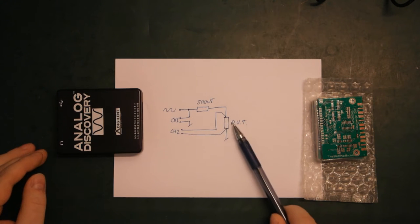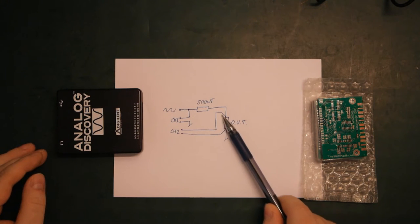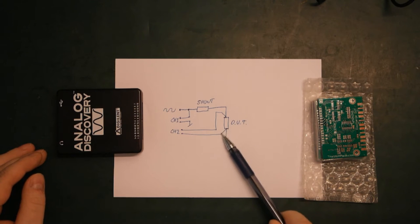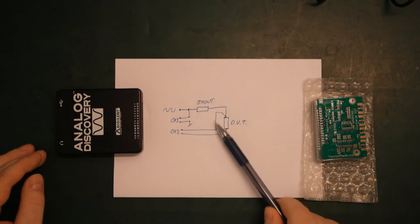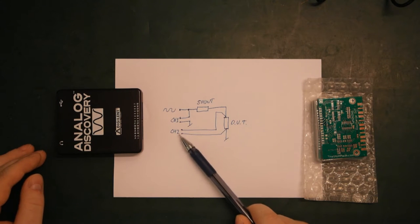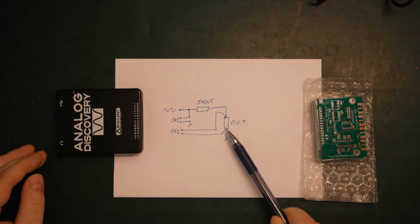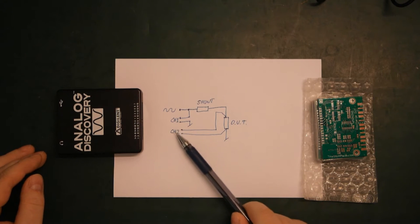Then we have our device under test here. And we have our Kelvin connections here to get as accurate a result as possible. And then we have our measurement across the DUT. These are the two scope channels. So we have channel one, channel two.